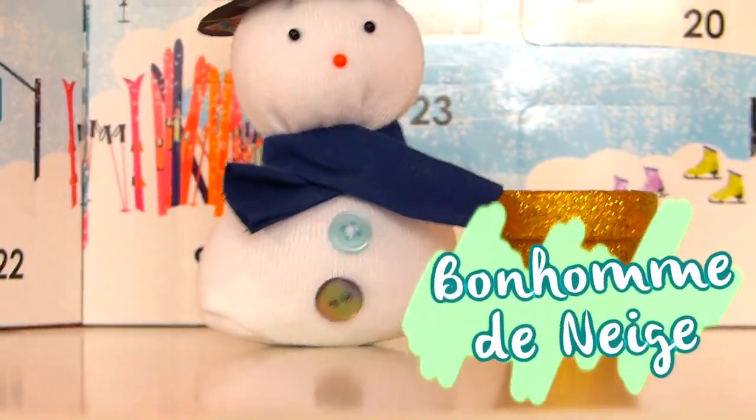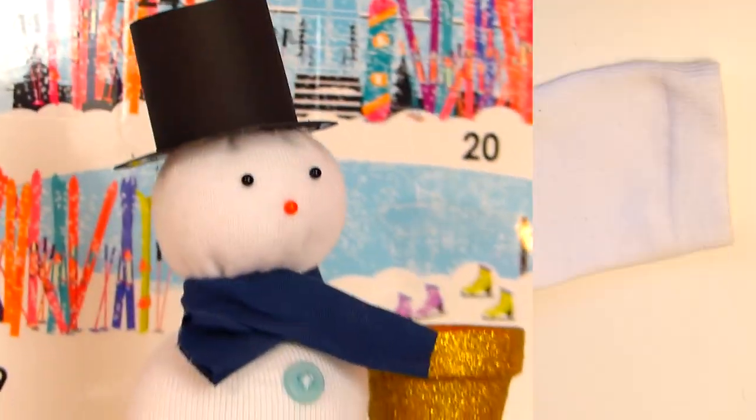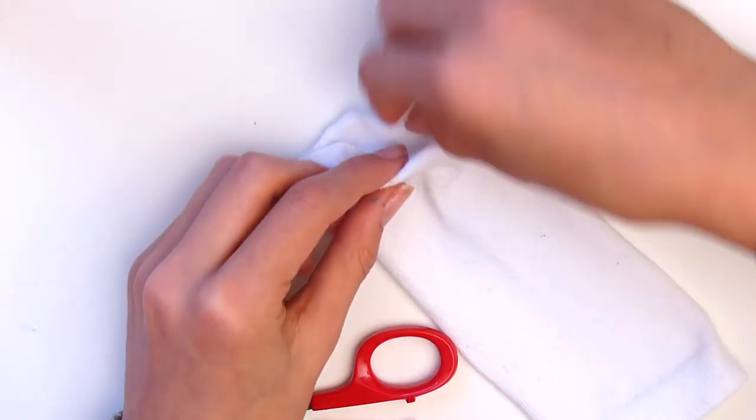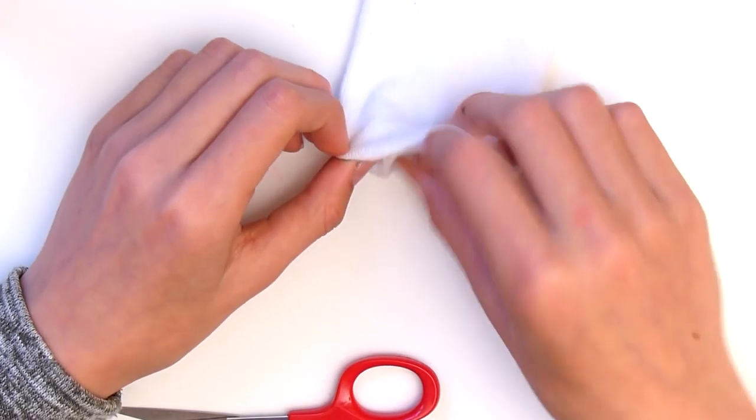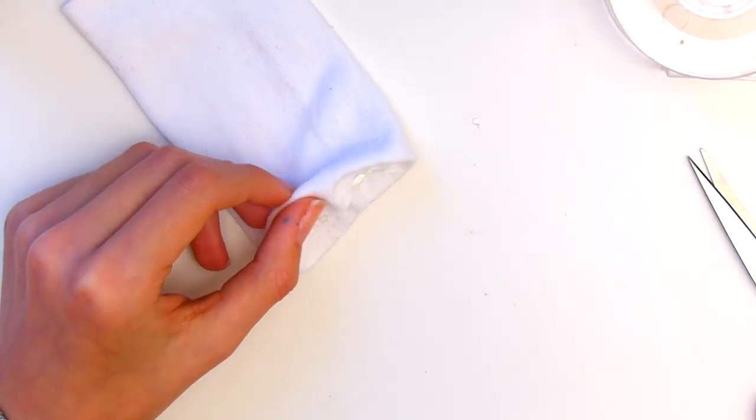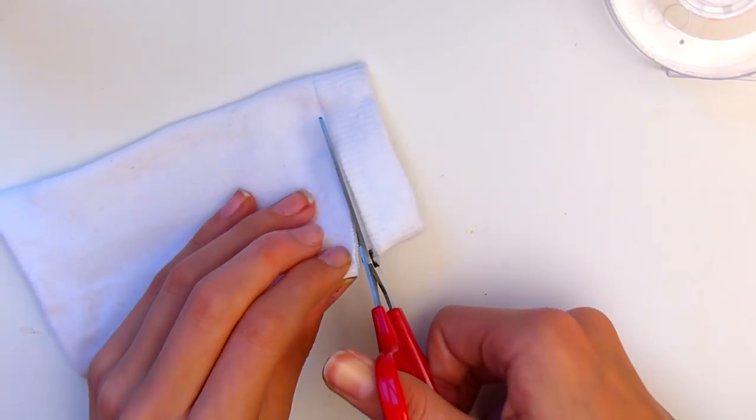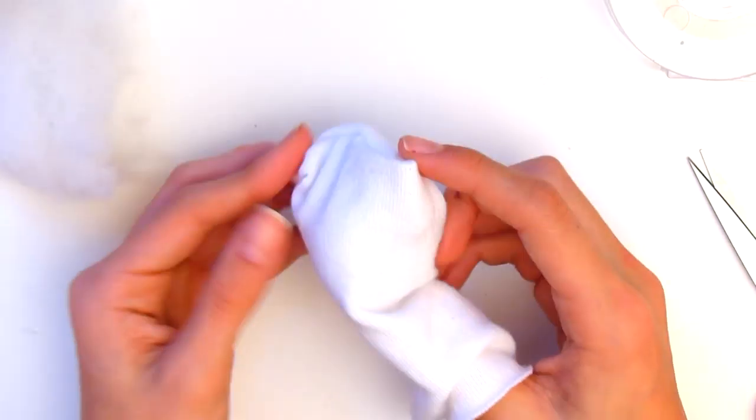Le DIY suivant est pour réaliser un petit bonhomme de neige avec une chaussette. On va commencer par couper le talon de notre chaussette et ne garder que le haut. Puis on va faire un petit ourlet là où on a découpé pour que ce soit plus joli et esthétique, et on referme ce trou avec de la colle chaude. Je découpe ensuite l'élastique qui se trouve en haut de ma chaussette.